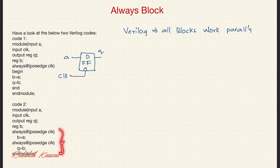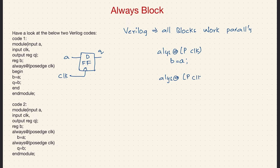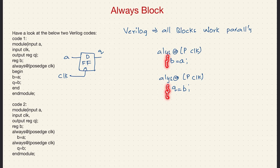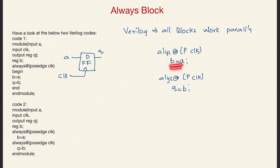In the second code we have two always blocks. The first is: always at positive clock edge, b equals a. The next one is: always at positive clock edge, q equals b. So now at time t equal to 1 second, since there are two always blocks, the two should start executing parallelly. So b equal to a and q equal to b will both execute at the same time.